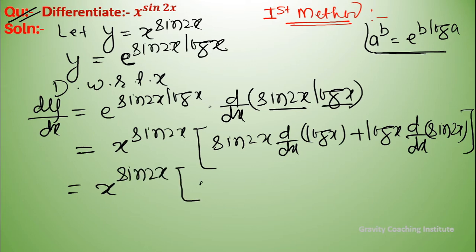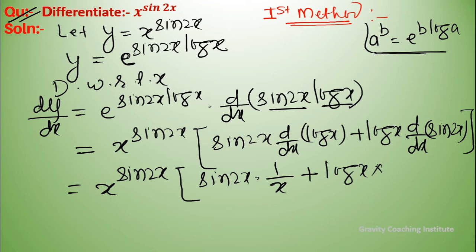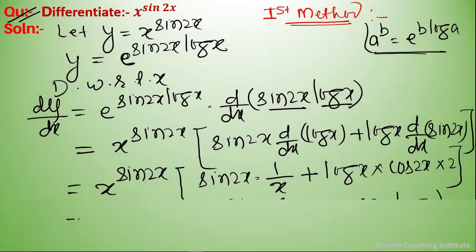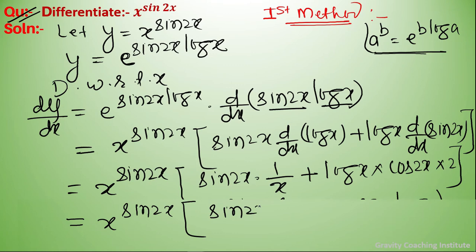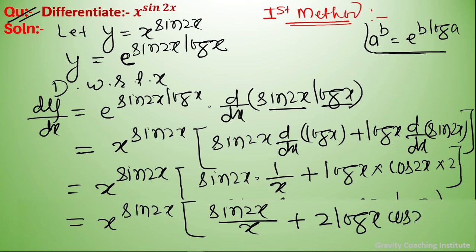sin 2x into differentiation of log x gives sin 2x upon x. For log x into differentiation of sin 2x, the chain rule applies: sin becomes cos 2x and the derivative of 2x gives 2. So the final answer is x to the power sin 2x into bracket sin 2x upon x plus 2 log x cos 2x.